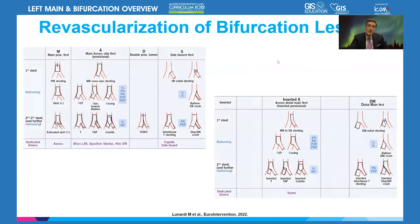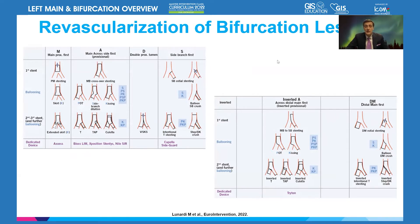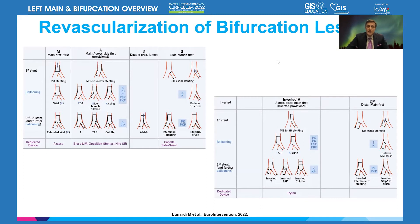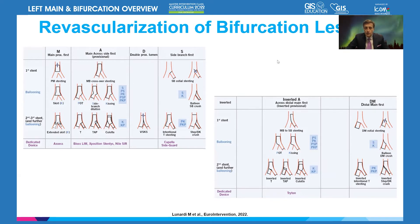Now let's go into bifurcation. The minority of cases are ostial or mid-shaft lesions that can be covered technically rather easily with a single stent, sometimes requiring a rotoblator. But most left main lesions are intertwined with a context of bifurcation. How we deal with a distal left main lesion — a 0-1-1 bifurcation — and how we figure out single versus double stent strategy is the key question.